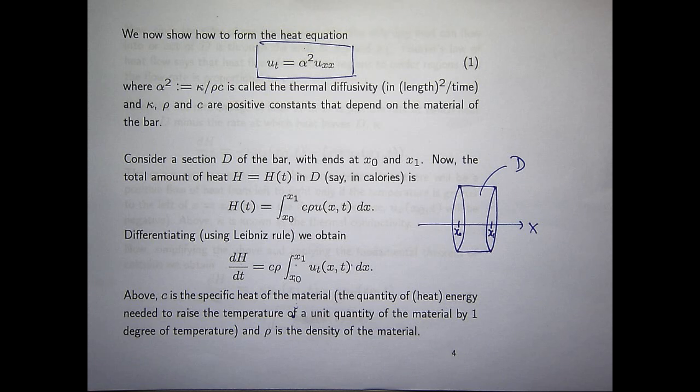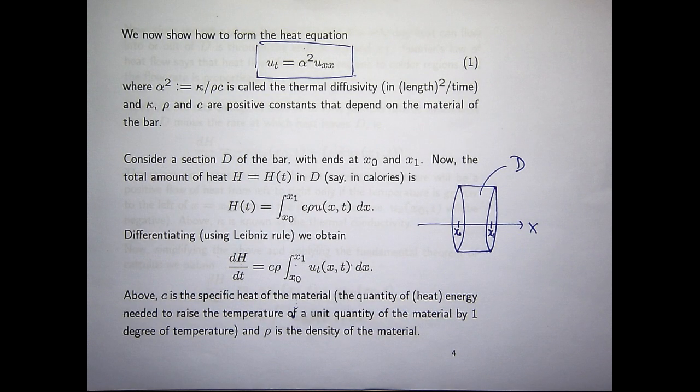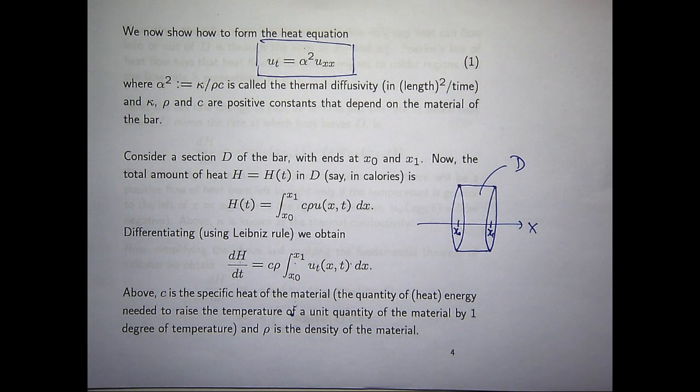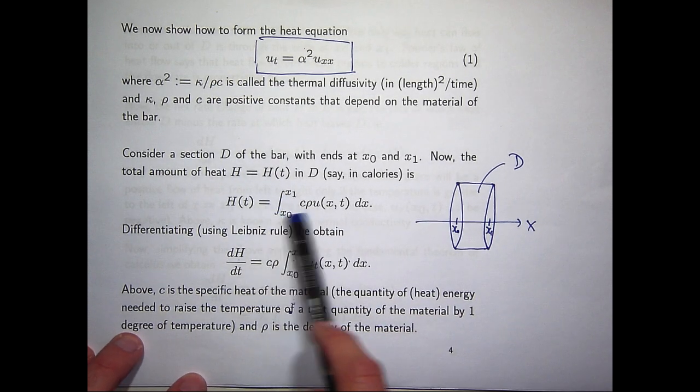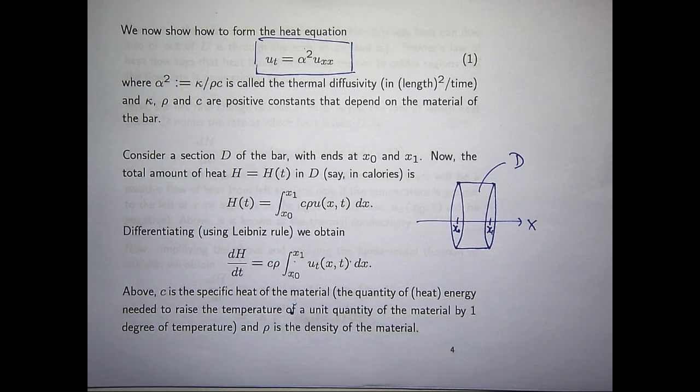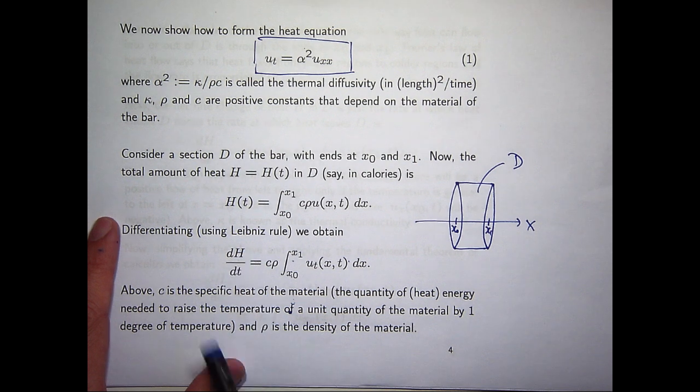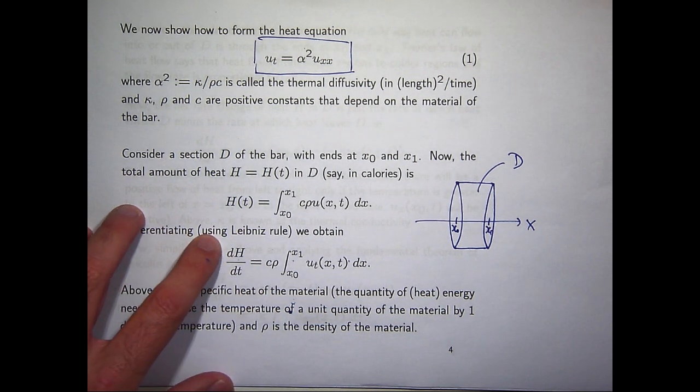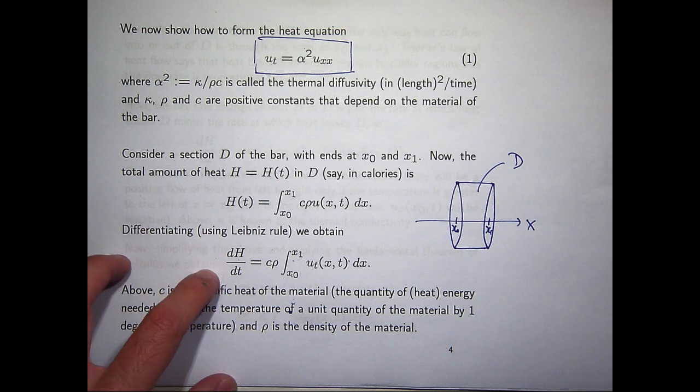Now, if you take this expression and differentiate it with respect to t, you can form a derivative, dH/dt. Now, using Leibniz rule, remember, you just differentiate both sides and then push the d/dt inside the integral sign and change the straight d's to curly d's. So you're taking a partial derivative. Now, the c and the rho are constants so they can come out the front of the integral sign.